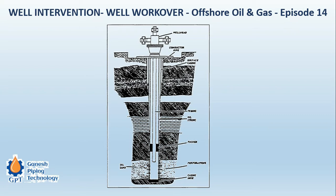Initially when the location of the well is identified, there are a series of other activities. First it is drilled, then metallic strings are inserted, and outside the string some concrete is poured so that even if the metallic strings get worn out, the hydrocarbon should not leak into the surrounding space. This ensures well integrity — meaning hydrocarbons will not seep out into the surroundings. This stage is called well completion: the well is now ready for production.